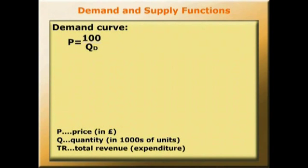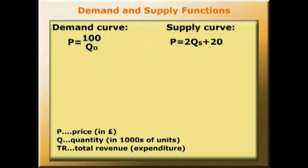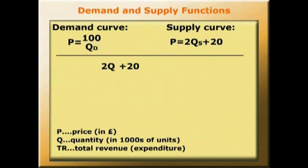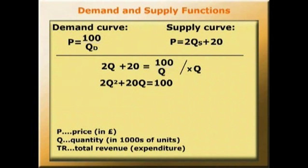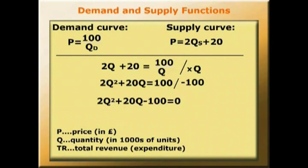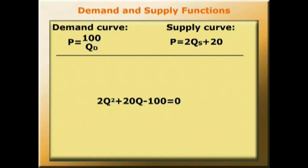So we have our demand curve, which is a rectangular hyperbola, and our supply curve is of a linear kind. The supply curve is p equals 2qs plus 20. In equilibrium, quantity supplied has to equal quantity demanded, so 2q plus 20 equals 100 over q. To find a solution, we multiply through by q: 2q squared plus 20q equals 100, giving us 2q squared plus 20q minus 100 equals 0. So we've got a quadratic equation to solve.